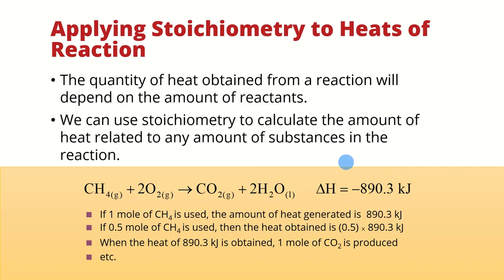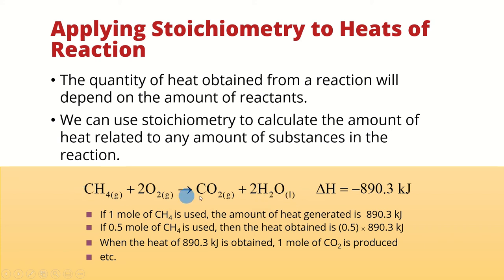Once we know the thermochemical equation, we can apply stoichiometry to the heat of reaction. The quantity of heat obtained from a reaction depends on the amount of reactants used or products produced. Consider the combustion reaction of methane gas producing carbon dioxide and water: one mole of methane reacts with two moles of oxygen to produce one mole of carbon dioxide and two moles of liquid water. The enthalpy change is negative 890.3 kilojoules.